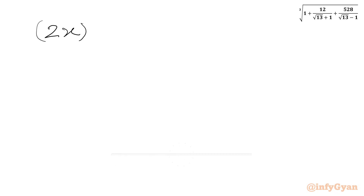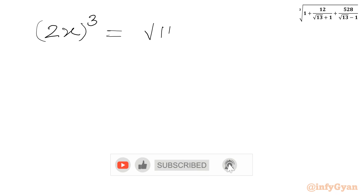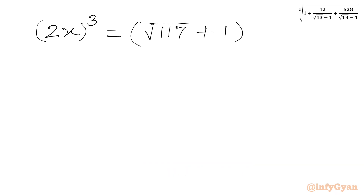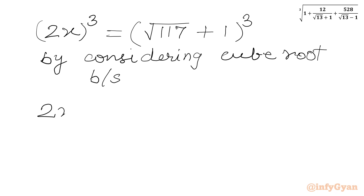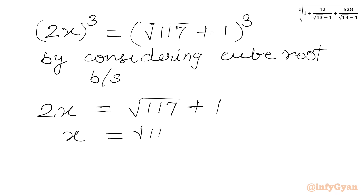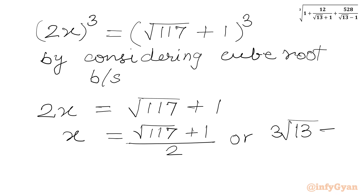So this gives us 2x whole cubed equal to square root 117 plus 1 whole cubed. Now for real values of x, I will take cube roots of both sides, giving 2x equal to square root 117 plus 1. Dividing both sides by 2, we get x equal to square root 117 plus 1 over 2. And since 117 equals 13 times 9, I can write the final answer as x equal to 3 square root 13 plus 1 over 2.